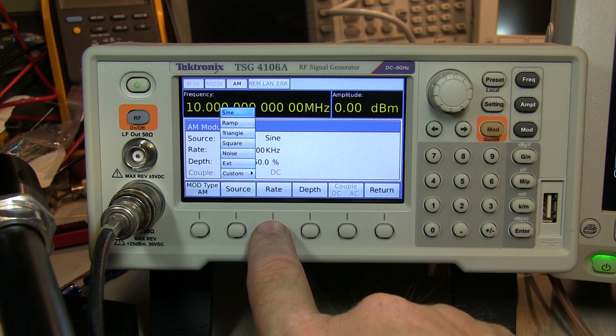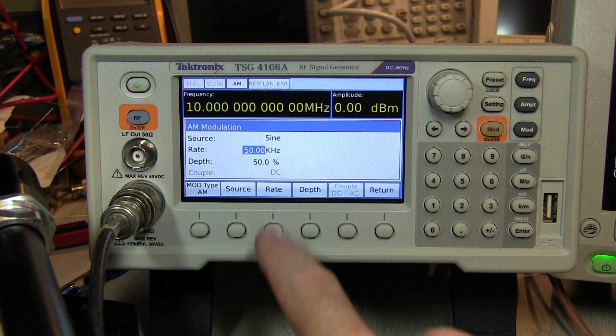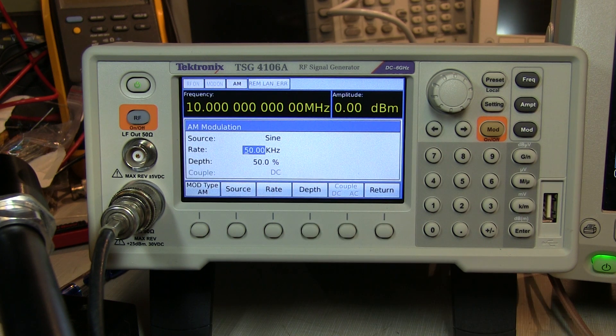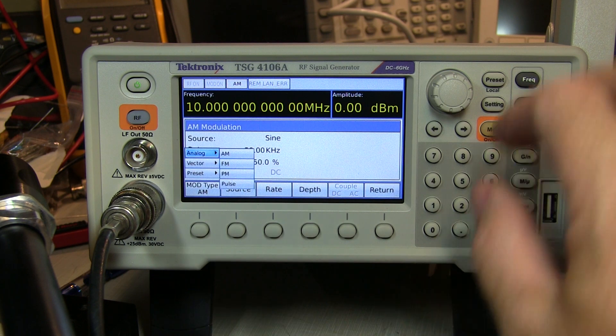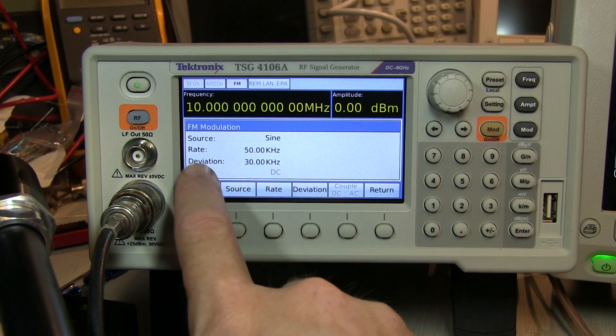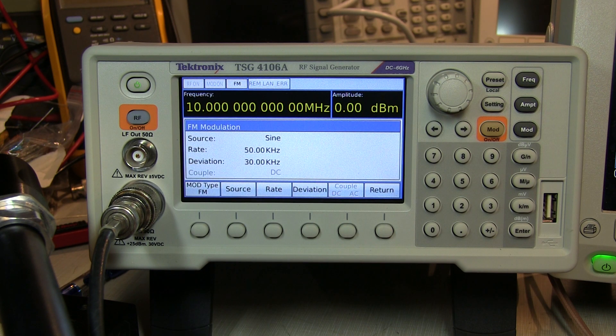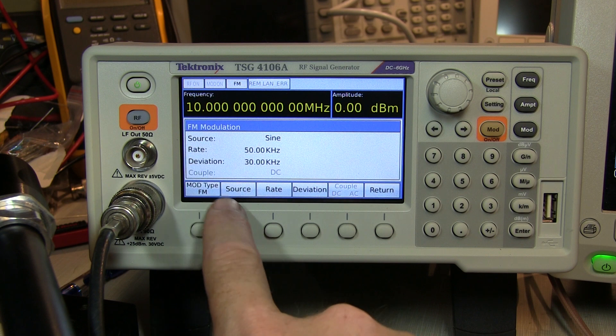Once you decide that, you can then select the rate, which would be essentially the baseband frequency. In this case, it would be a 50 kilohertz sine wave, and then for AM, modulation depth. If we select something like FM, then we can see that that changes from depth to deviation, because that would make sense for a frequency modulated signal. All the same other choices.